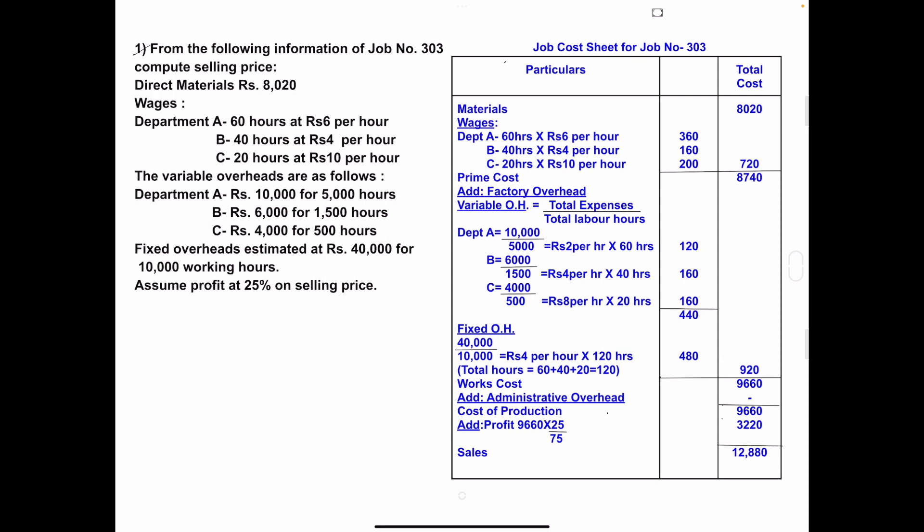The variable overheads are as follows — Department A: rupees 10,000 for 5,000 hours; B: rupees 6,000 for 1,500 hours; C: rupees 4,000 for 500 hours. Fixed overhead estimated at rupees 40,000 for 10,000 working hours. Assume profit at 25% on selling price. In this problem, they have given information related to material, wages, variable overhead, and fixed overhead, and we have to prepare the job cost sheet for job number 303.